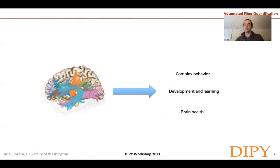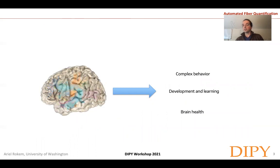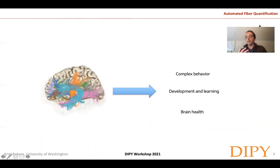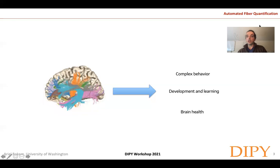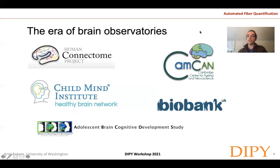We're interested in the relationship between brain connections that we can measure with diffusion MRI and a variety of complex behaviors, and the relationship of these connections with development, learning, and brain health. Our strategy is to use large data sets that I sometimes refer to as brain observatories — akin to an astronomical observatory where a lot of data is collected centrally and then distributed to the community for anyone to analyze and draw insights from.